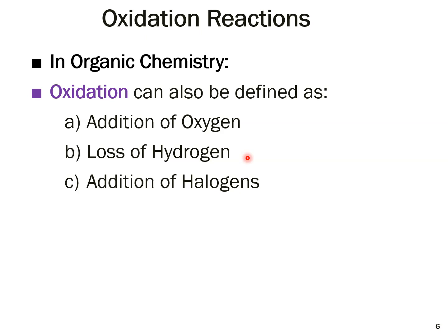Additionally, addition of halogens is also treated as an oxidation reaction in organic chemistry — if halogens are added to a reactant, that reactant is considered oxidized. In today's lecture, we focus specifically on oxidation where hydrogen is replaced by oxygen: hydrogen is lost (oxidation) and replaced by oxygen (also oxidation).